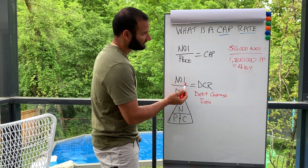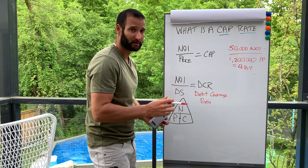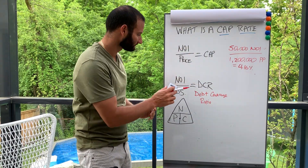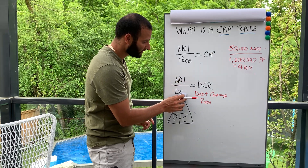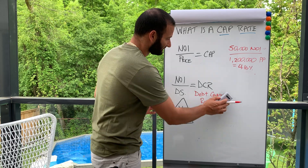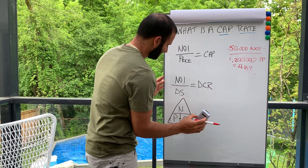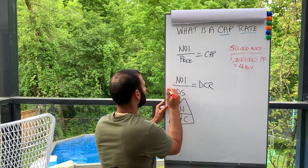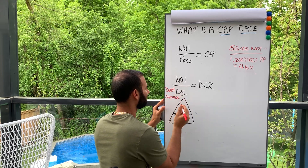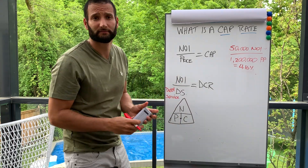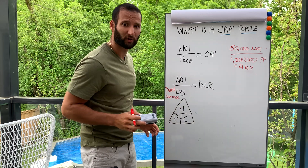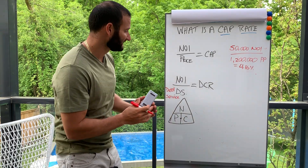We know how to calculate net income: gross income minus operating expenses. Then you divide net income by debt service — DS stands for debt service, which is simply your mortgage payment. So it's annual NOI divided by annual debt service.